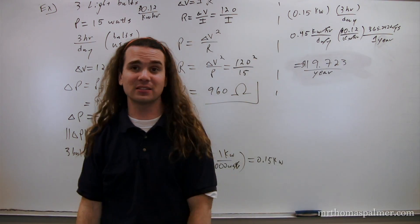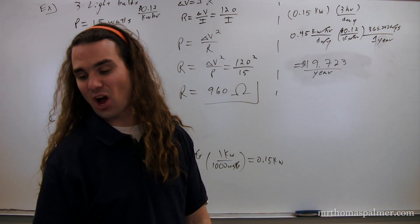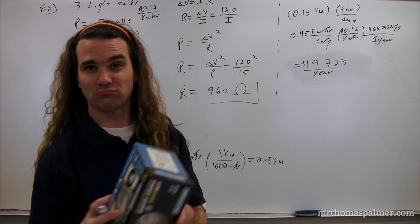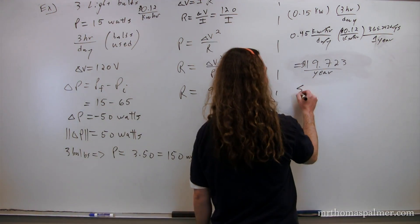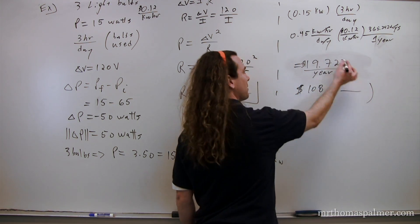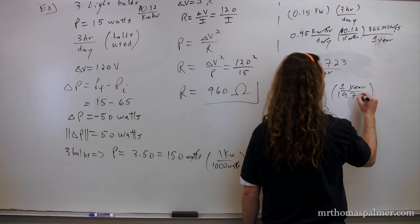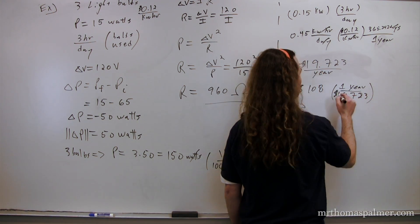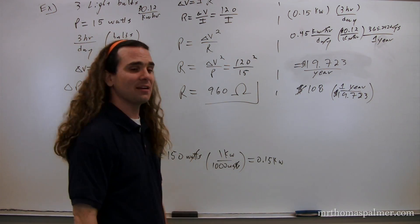So, let's estimate how many years they think that this would last. Because they think we could save 108 dollars. So, if we take the number that they claim, 108 dollars, we multiply it by the reciprocal of what we got here, one year, over 19.723 dollars. Dollars cancel out. And we will figure out how many years these would have to last for us to save the 108 dollars that they claim. That ends up being 5.476 years.